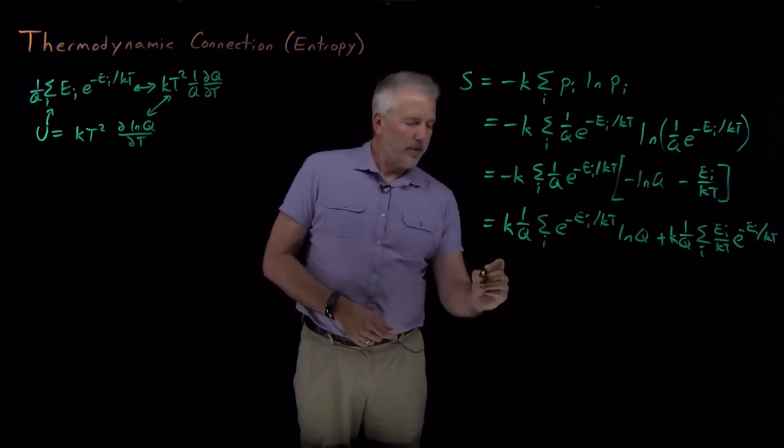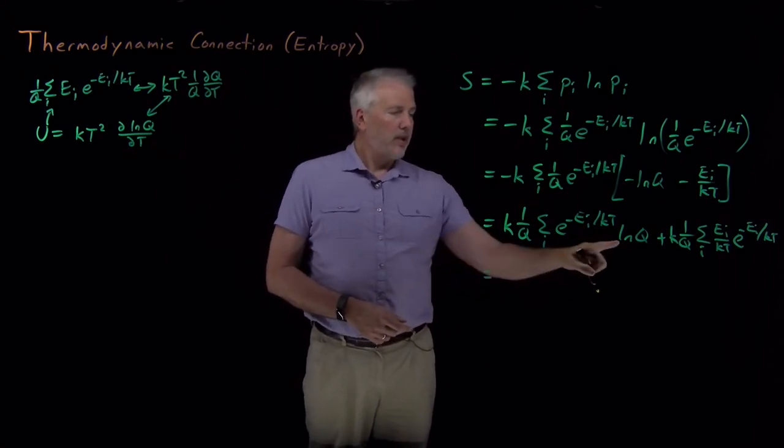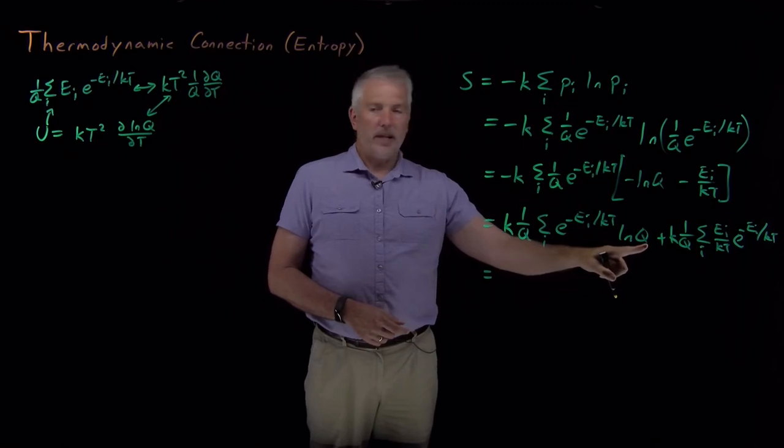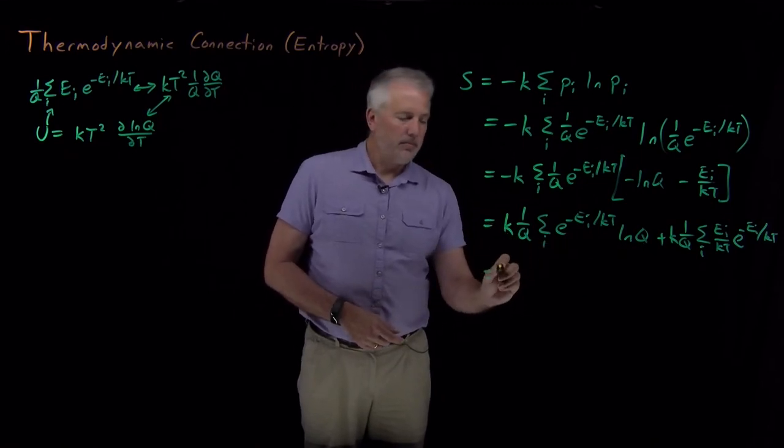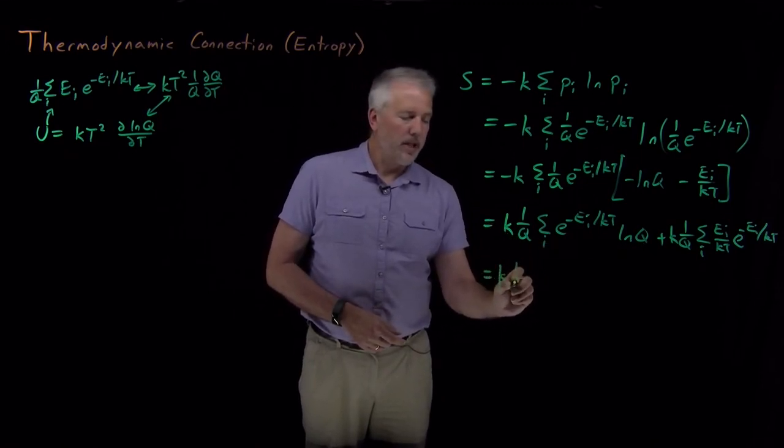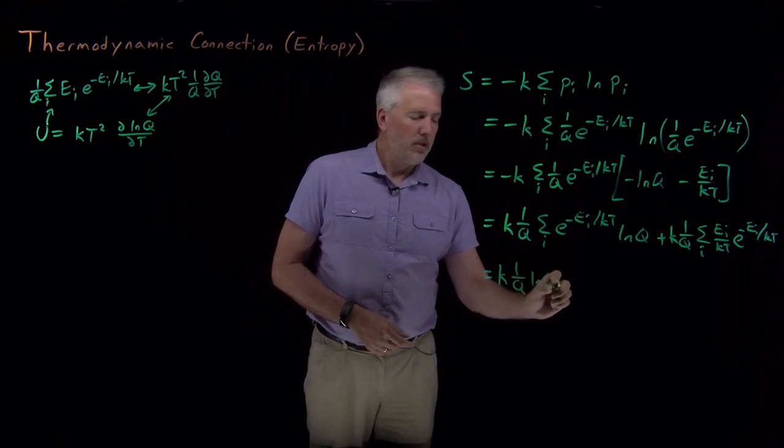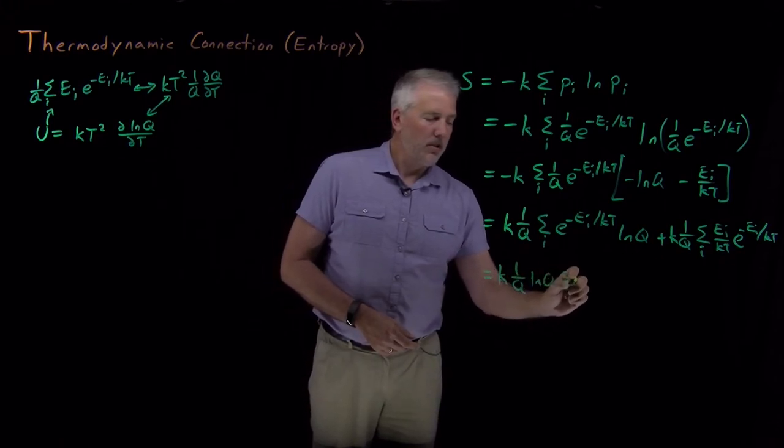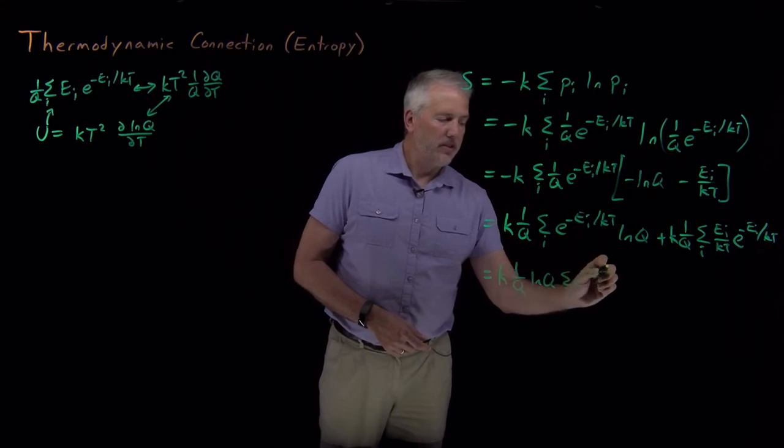If I simplify each one of those a little bit further, this log q doesn't involve any i, so I can pull that outside the sum. So the first term, I've got k times 1 over q times log q times the sum of these Boltzmann factors, e to the minus energy over kT.